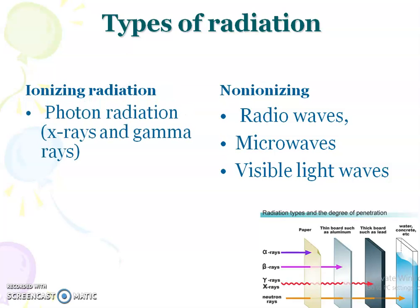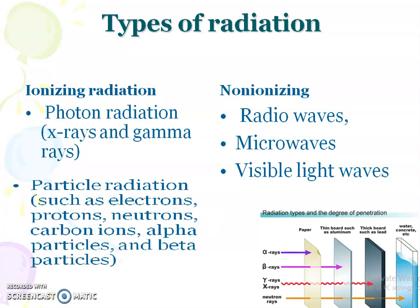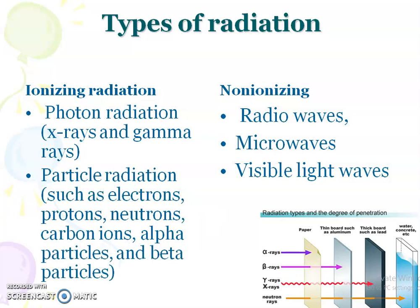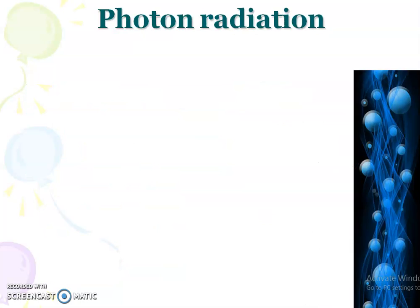Under ionizing radiation, one group is photon radiation, in which we use X-rays and gamma rays to treat cancer. The other group is particle radiation, which includes electrons, protons, neutrons, carbon ions, alpha particles, and beta particles. These are used to treat cancer. We will now see each type in detail.